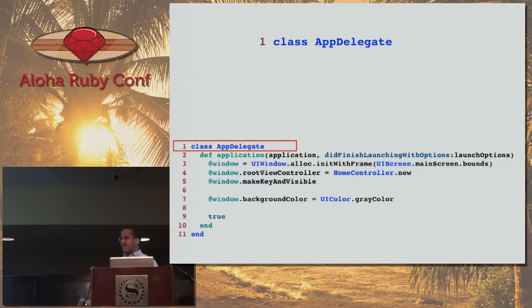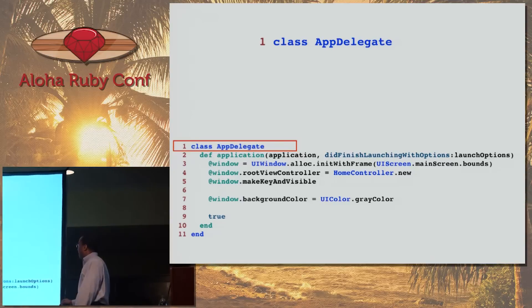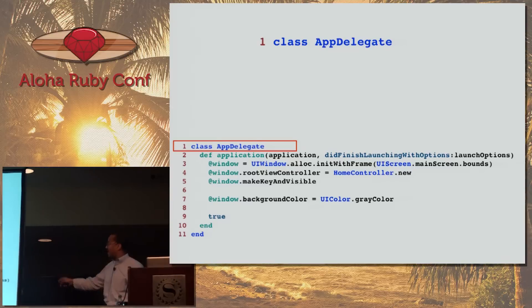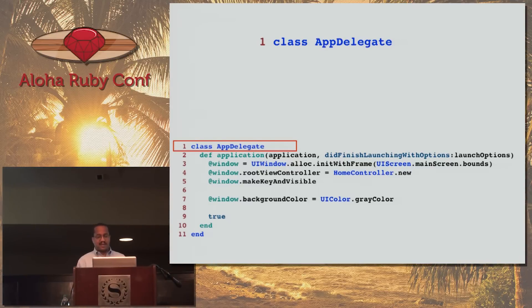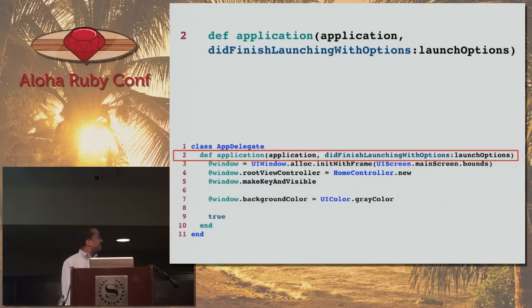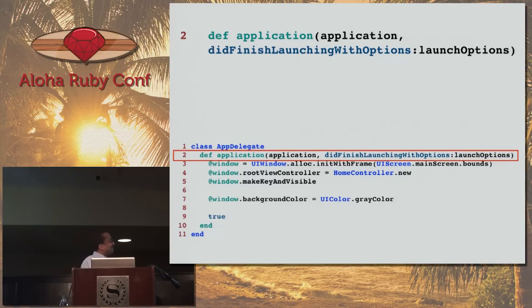Let's take a closer look at the app delegate. In these slides, code appears at the bottom with a highlighted line shown enlarged up top. App delegate is the entry point for the application — this is what iOS looks for when it's going to run your application. Here's where you're defining the actual entry point: 'application did finish launching with options.' What a long method name. This certainly is not a Ruby-looking method — it looks more like an Objective-C method, and it is, really.